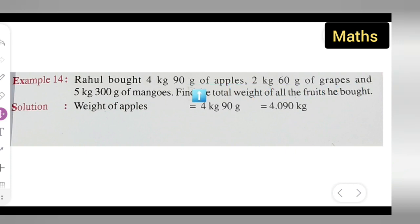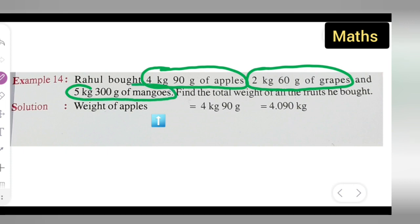of grapes and 5 kg 300 grams of mangoes. So what he brought is apples this many, then grapes this many, and mangoes this many.